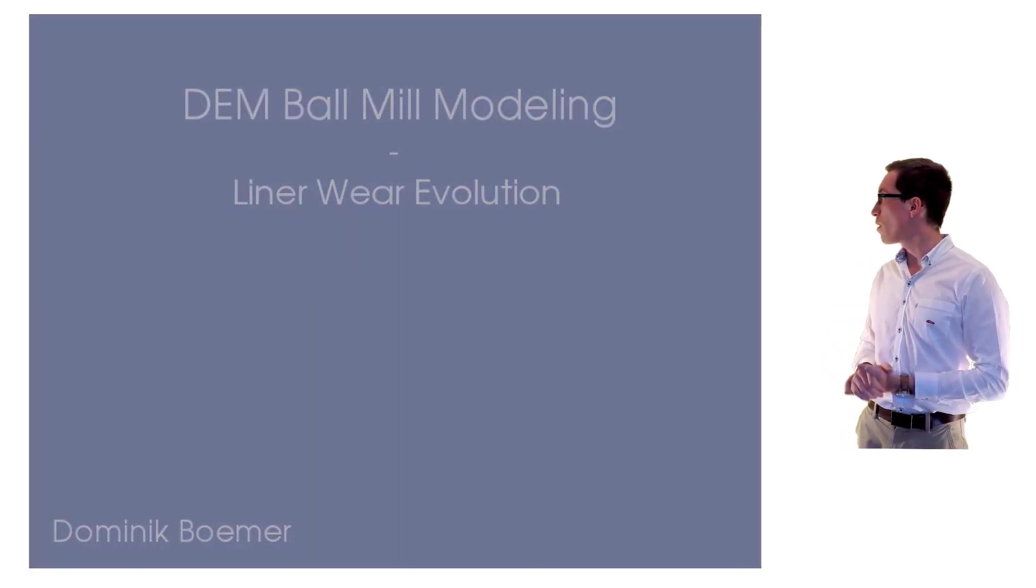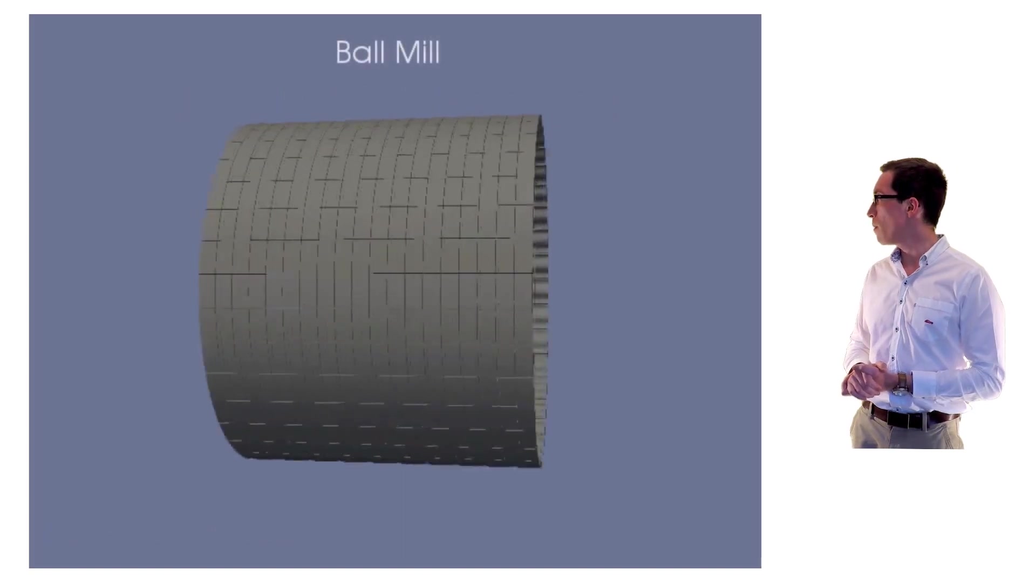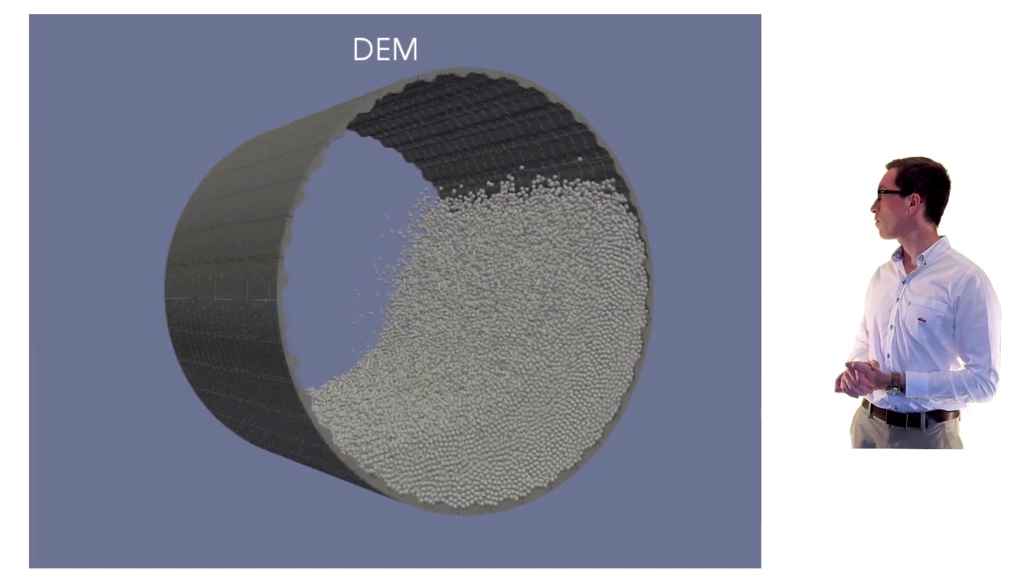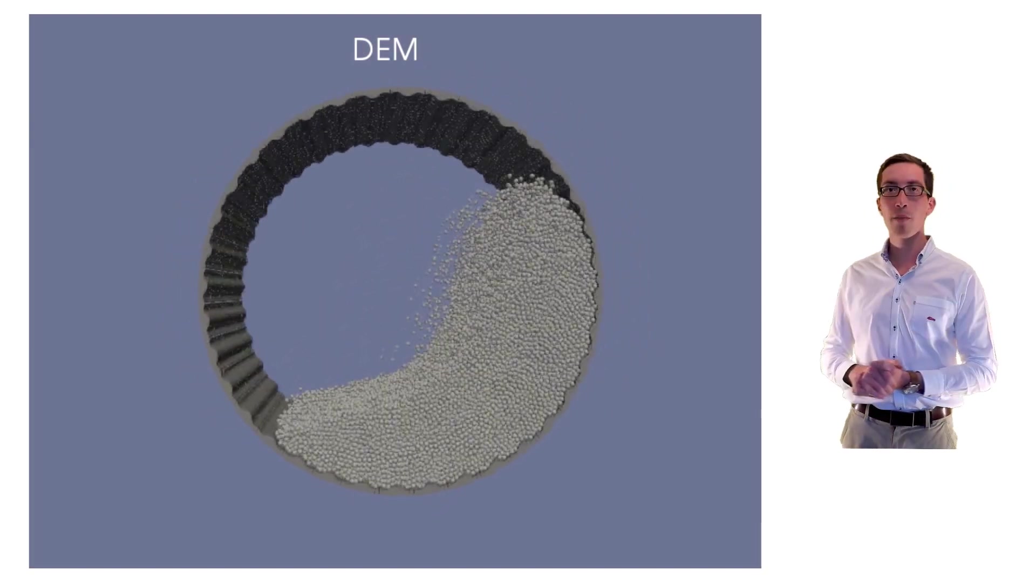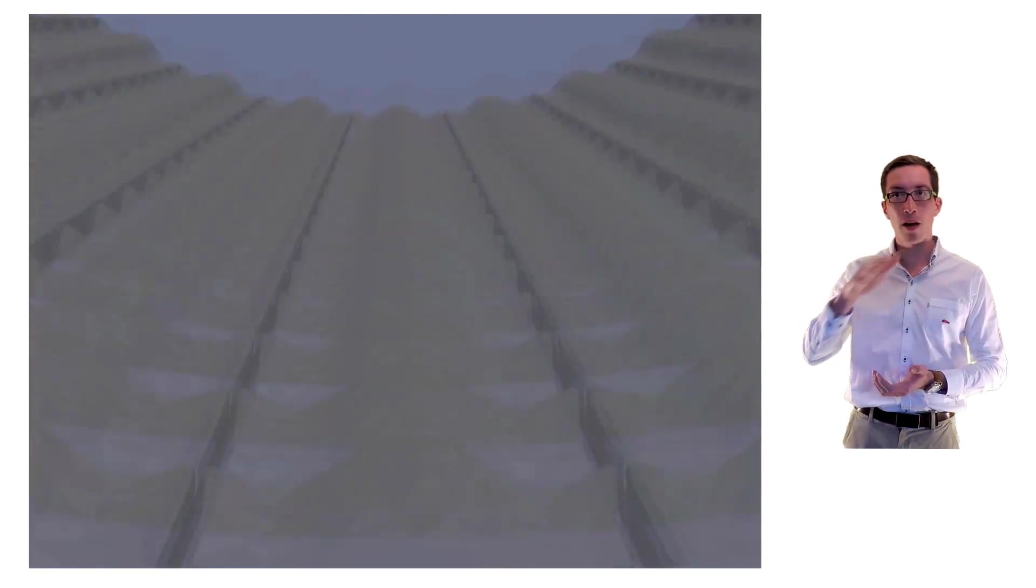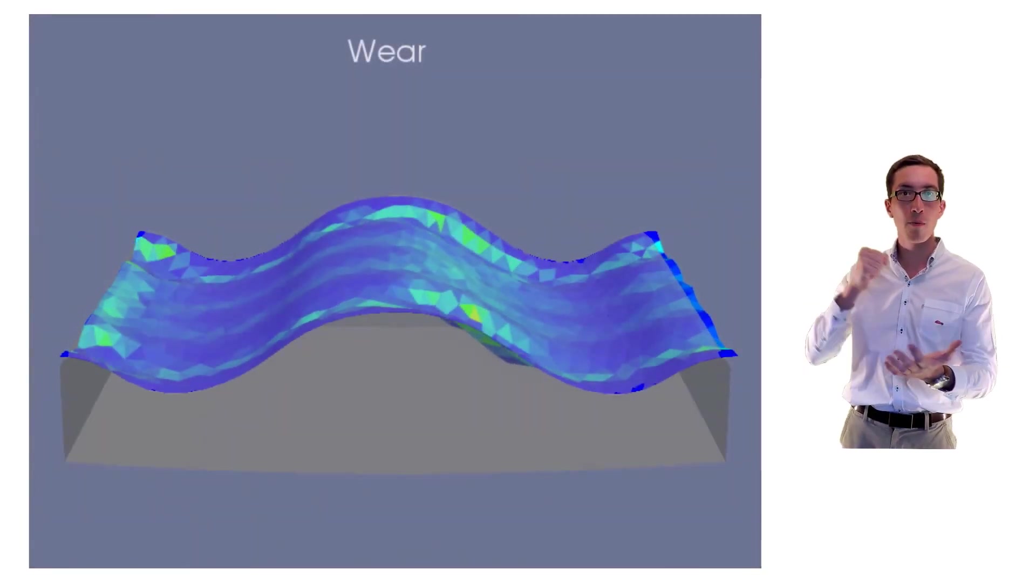Today we will talk about the ball mill. We will also talk about the discrete element method simulation of the grinding charge and finally we will talk about the liner wear. This means the change in the geometry of the liner plates due to the collisions with the metal balls.